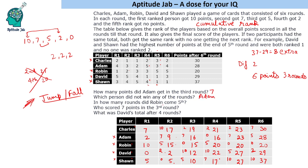In how many rounds did Robin come fifth? Fifth place means scoring 0 points. Robin scored 0 points in three rounds, so the answer is 3 rounds.